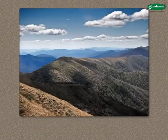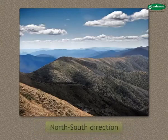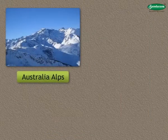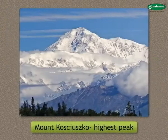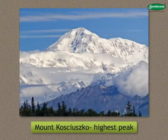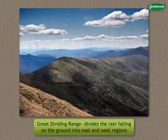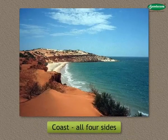To the east of the plains is the Great Dividing Range. It runs in the north-south direction. This range includes the Australian Alps and New England Hills. Mount Kosciusko in this region is the highest peak in Australia. The Great Dividing Range is named so because it divides the rain falling on the ground into the east and west regions.